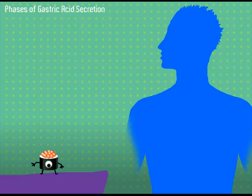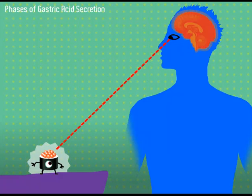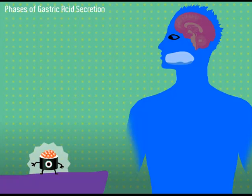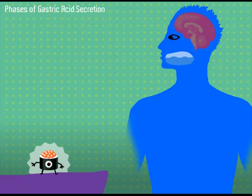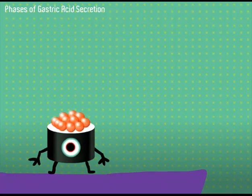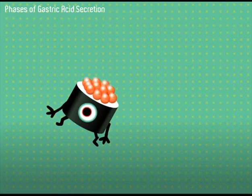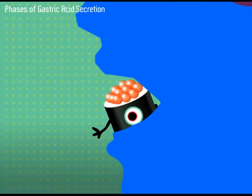In the cephalic phase, cognitive and sensory stimulation triggers parasympathetic outflow via the glossopharyngeal nerve to enhance salivary secretions, and the vagus nerve, which in turn enhances gastric and pancreatic secretions.